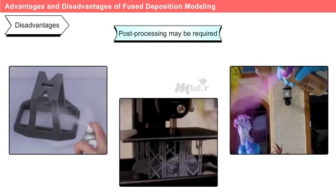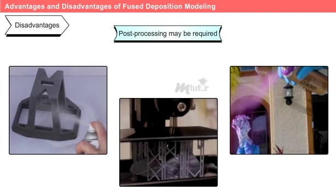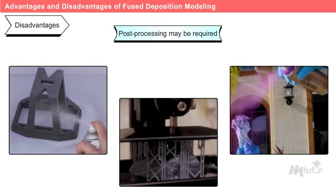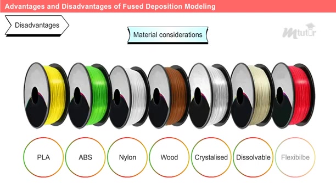Fifth, post-processing may be required: in some cases, FDM prints may require additional post-processing steps such as sanding, smoothing, or painting, to improve the surface finish and eliminate visible layer lines. And last is material considerations: while FDM supports a wide range of materials, users should be mindful of the compatibility of certain high-performance or specialized filaments with their specific FDM printers.